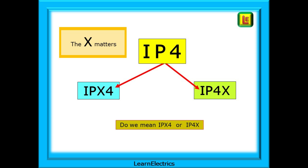The letter X in the code really does matter — it's a place marker. It helps us to decide if we are talking about solids or liquids. If we only had IP 4, do we mean IP X4, or do we mean IP 4X? It matters.